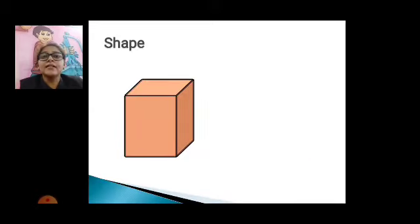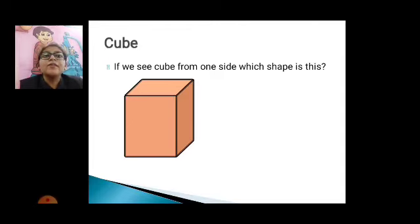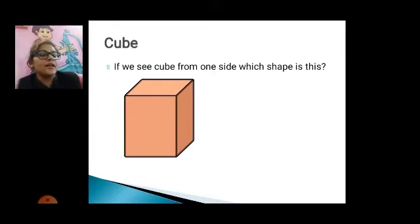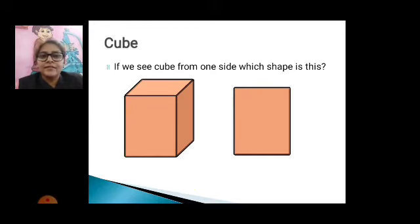So 3D shapes are, this is the cube, right? Cube, if we see the cube from one side, it means if you see the dice, dice jo hota hai, then you see the dice from one side, it looks like a square.